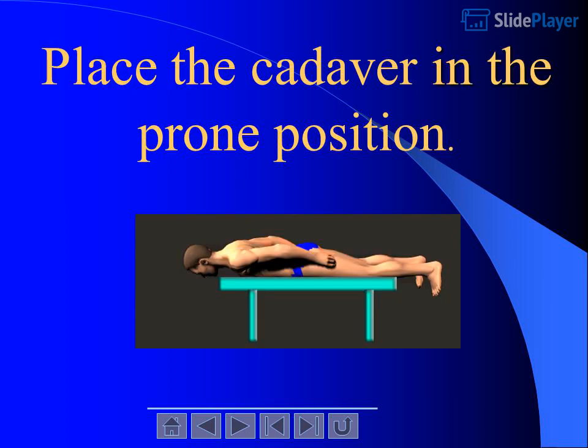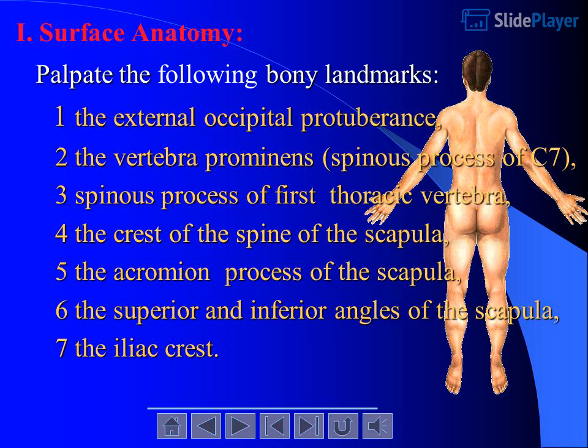Place the cadaver in the prone position. Surface anatomy: palpate the following bony landmarks: 1. The external occipital protuberance. 2. The vertebra prominens, spinous process of C7. 3. Spinous process of the 1st thoracic vertebra. 4. The crest of the spine of the scapula. 5. The acromion process of the scapula. 6. The superior and inferior angles of the scapula. 7. The iliac crest.